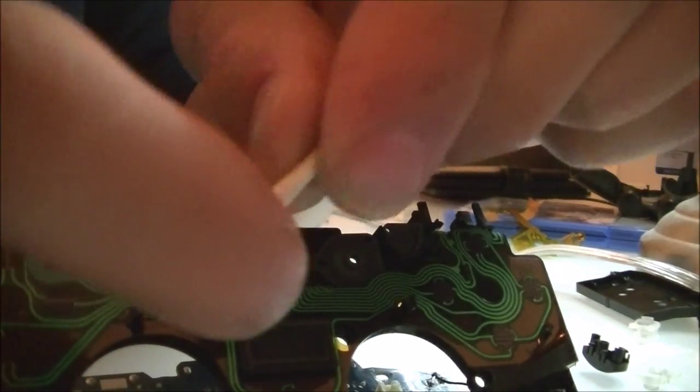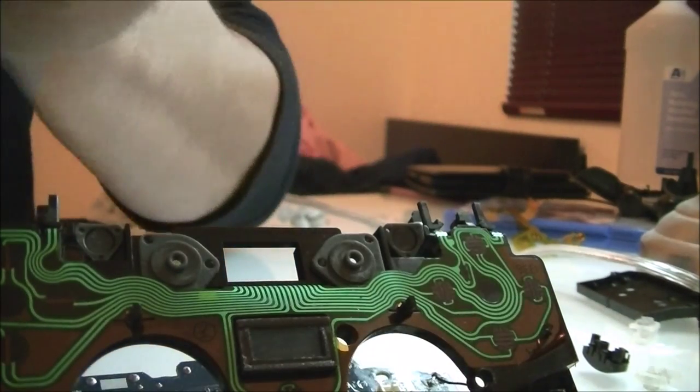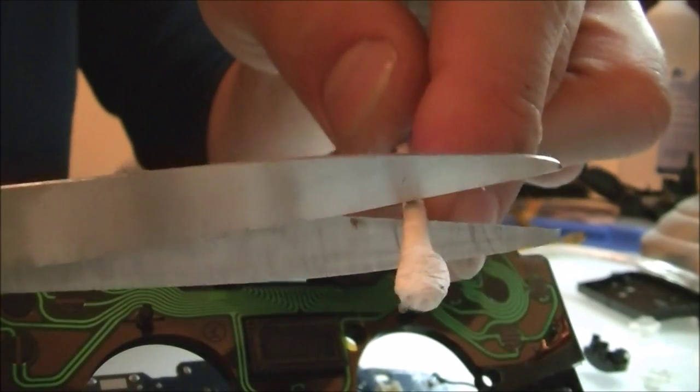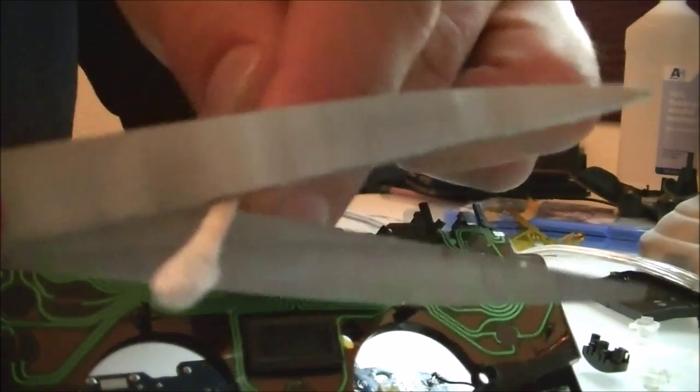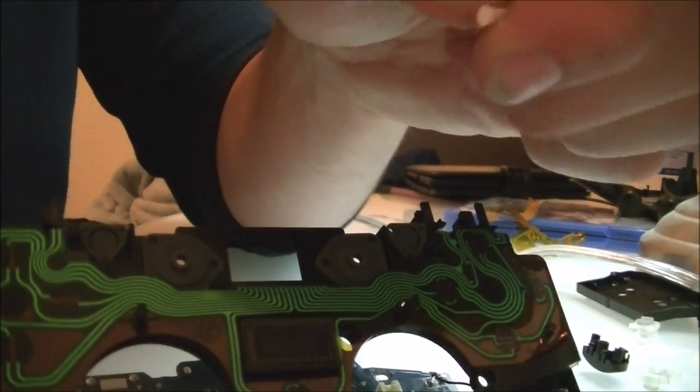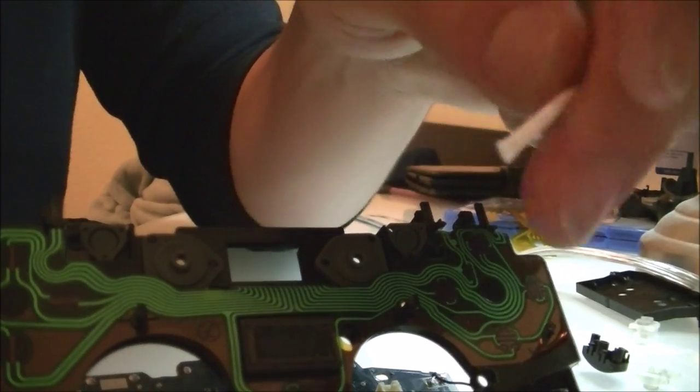So for this I'm going to be using a Q-tip. The Q-tip of course has cotton on it, so I'll grab a pair of scissors and I will cut that tip off, therefore leaving somewhat of a blunt edge for me to use.